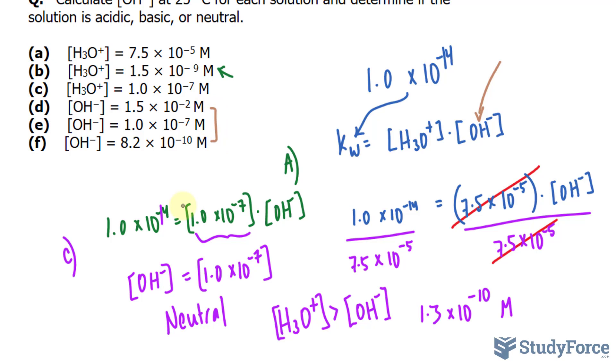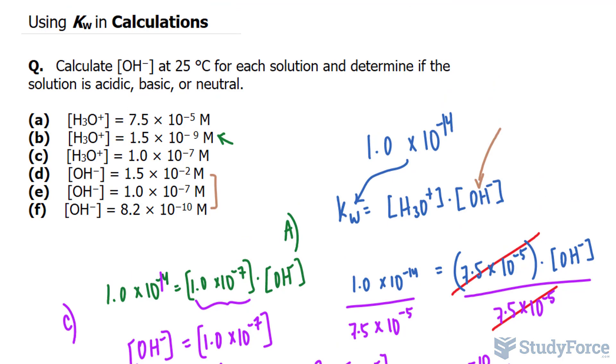You would then divide both sides by the concentration that is provided, and you would end up with the concentration of H3O+. If that concentration is greater than OH-, then it is acidic, as discussed earlier. Otherwise it is basic, and if they're both the same, then it will be neutral. And there you have it. That is how to use the autoionization constant in calculations.